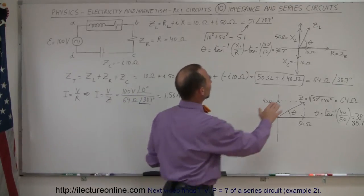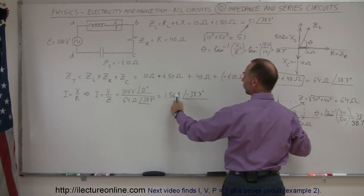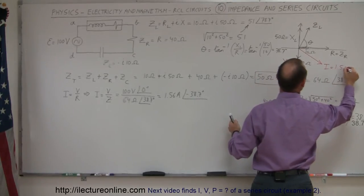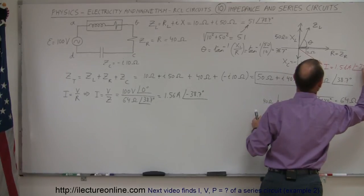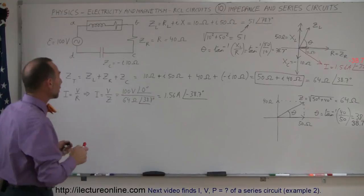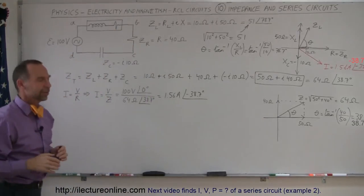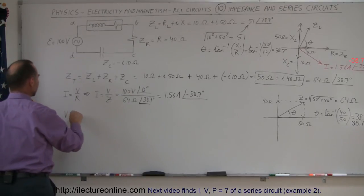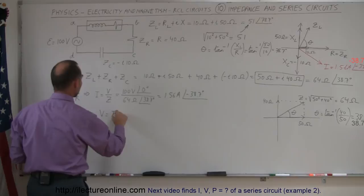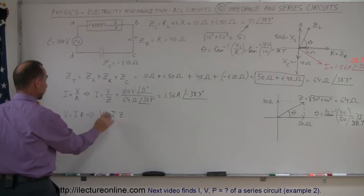On our phase diagram, we have the impedance of the inductor, the resistance of the resistor, and the reactance of the capacitor. The current is at minus 38.7 degrees, so I equals 1.56 amps at a phase angle of negative 38.7 degrees. Now we want to find the voltage across each of the three components — the inductor, the resistor, and the capacitor. From Ohm's law, voltage equals current times impedance, and we'll apply that to each component. The current is the same throughout because it's a series circuit.